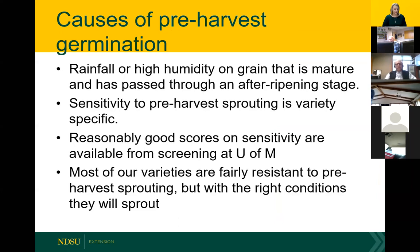Pre-harvest germination where you actually see sprouts is associated with high humidity and rainfall. It usually happens after kernels have passed through a period of after-ripening — the kernels dry down to about 20 to 25 percent moisture and then are re-wetted. There is some sensitivity or difference in sprouting ability among varieties. At NDSU we don't do screening for this at the moment, but most varieties on our list are fairly resistant to pre-harvest sprouting, though sprouting can still occur with the right conditions.